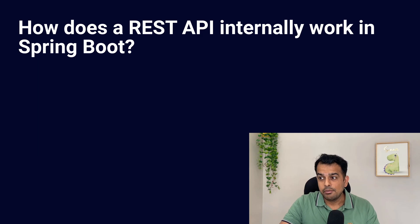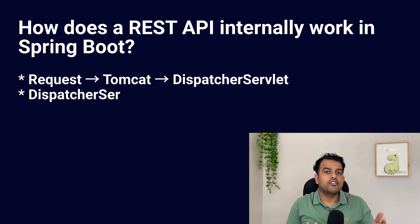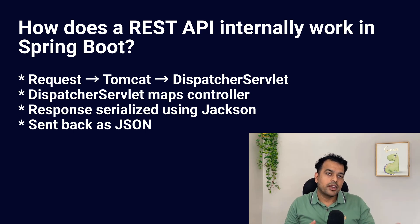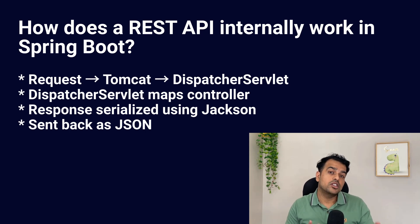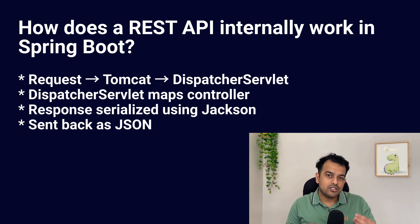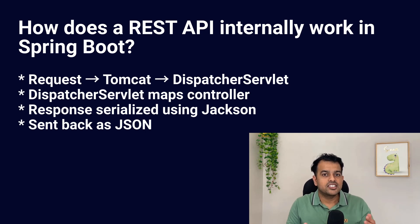How does a REST API internally work in Spring Boot? Whenever a request comes in, it first goes through the embedded server — mainly Tomcat by default, but you can change it. Tomcat forwards the request to the DispatcherServlet, which is built into Spring Boot. The DispatcherServlet finds which controller method should handle it, calls that controller, gets the response back, converts it into JSON using the Jackson library, and finally sends the JSON back to the client.